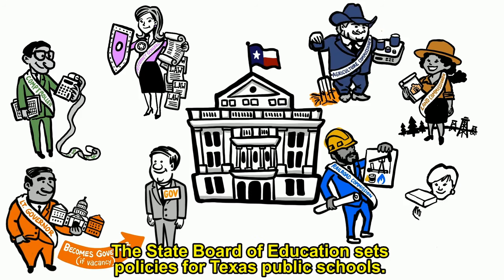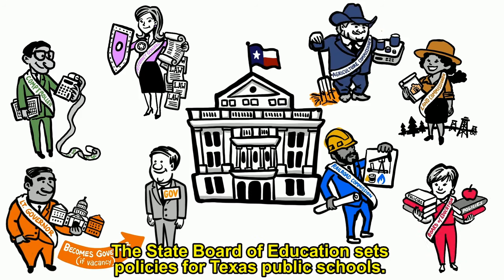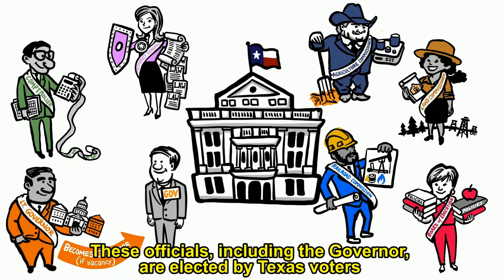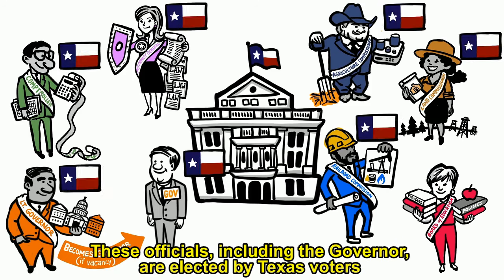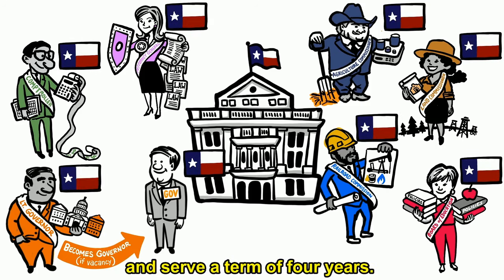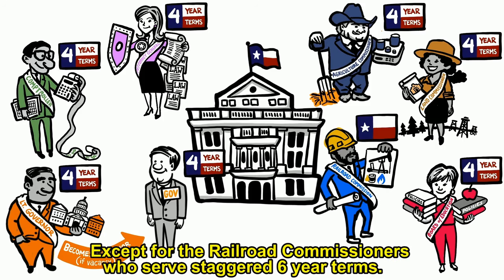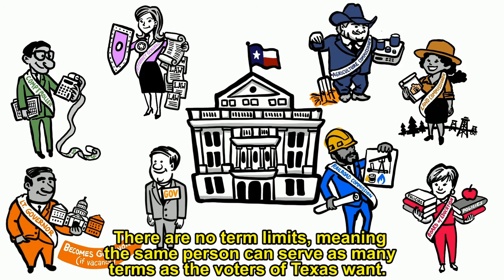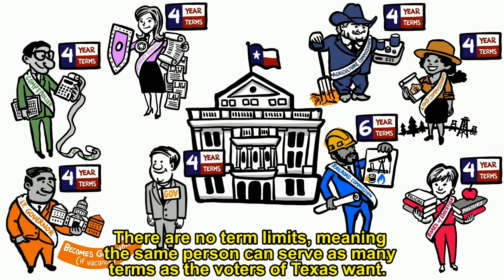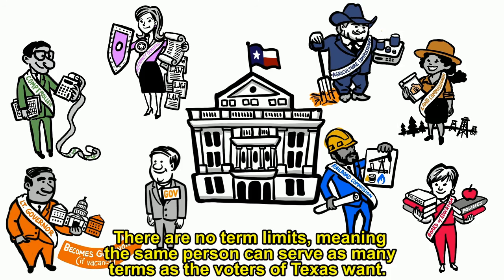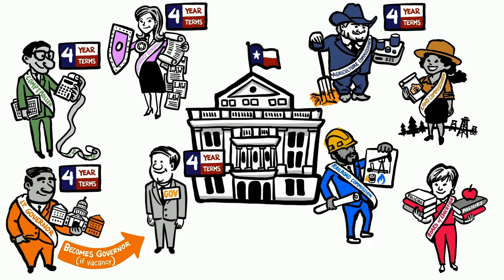The Agriculture Commissioner promotes the agriculture industry as well as the accuracy of weights and measures. The State Board of Education sets policies for Texas public schools. These officials, including the governor, are elected by Texas voters and serve a term of four years, except for the railroad commissioners who serve staggered six-year terms. There are no term limits, meaning the same person can serve as many terms as the voters of Texas want.